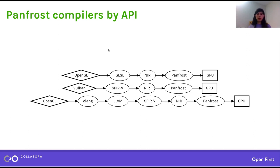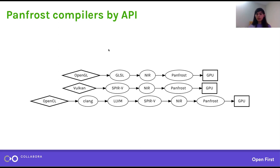This allows us to avoid duplicating effort in silly places. It makes no sense for PanFrost to have to know how to parse C code in order to implement OpenCL. On the other hand, it doesn't make any sense for Clang to know how to output Mali code directly. So we have the layering. It's hard to get totally right, but I like to think we're getting close.